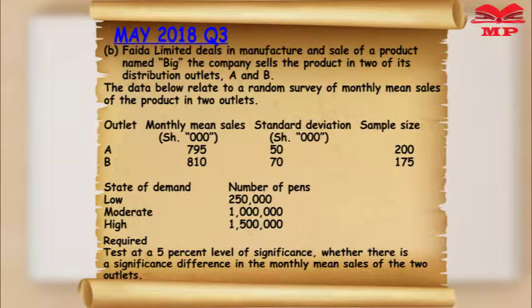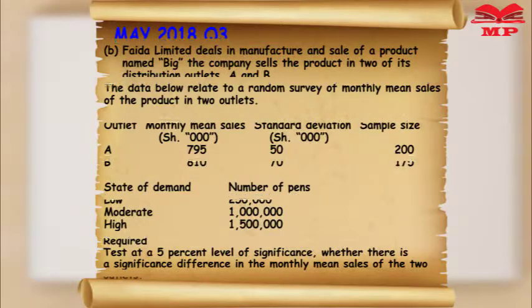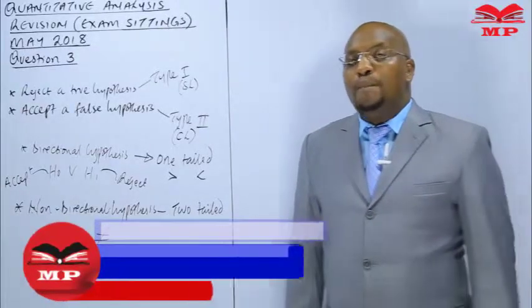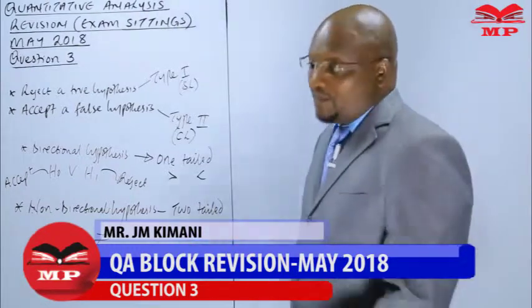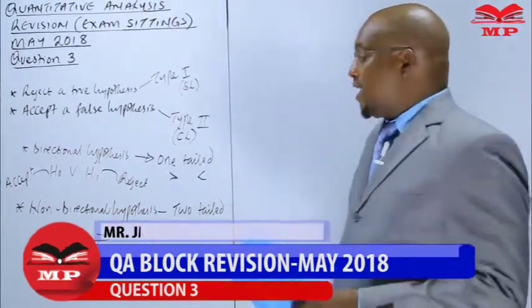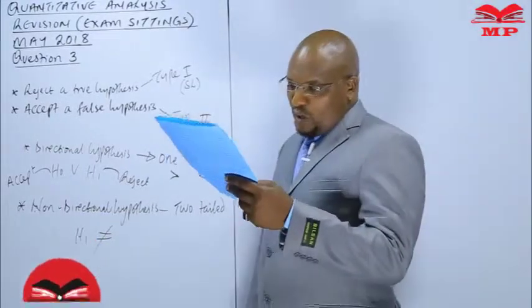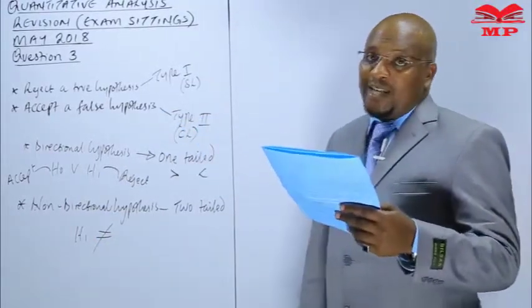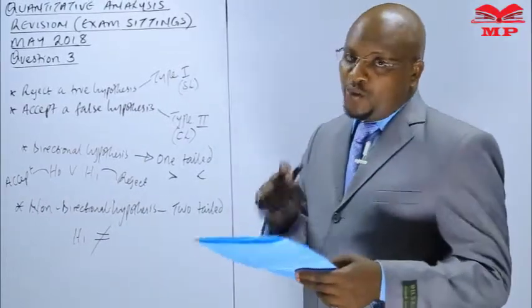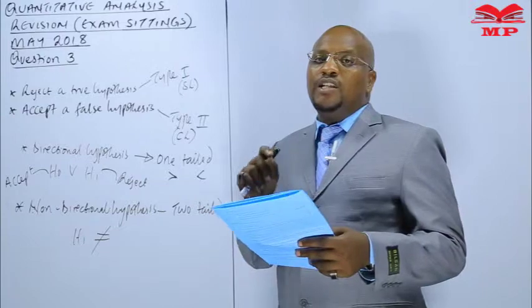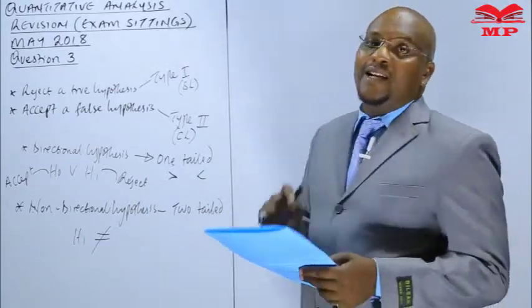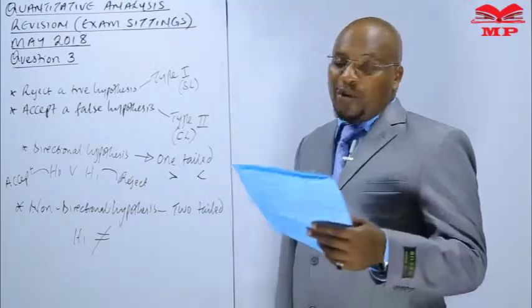The sample size is 175. We are required to test at a five percent level of significance whether there is a significant difference in the monthly mean sales of the two outlets. This is a two-population question, and because the sample sizes are 200 and 175 — both greater than 30 — we are going to use the normal distribution Z-test, not the t-test.